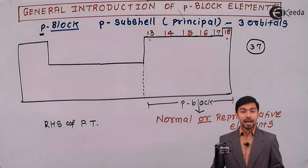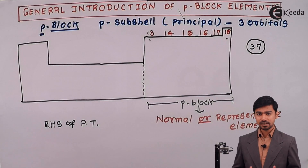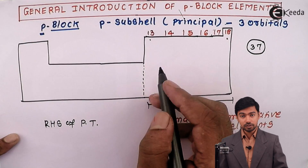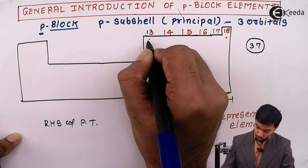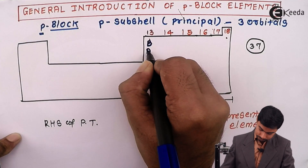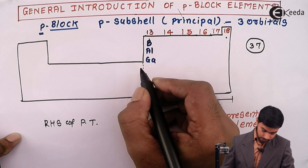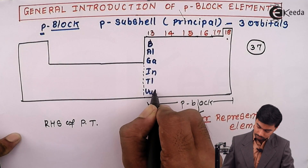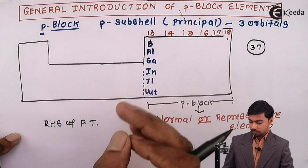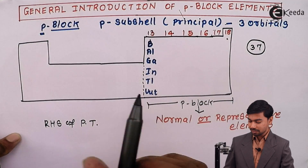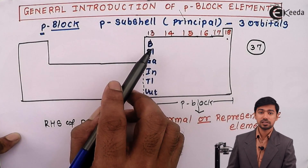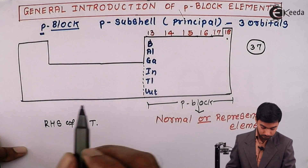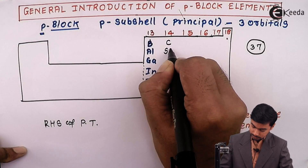Let us look at the segregation of these 37 p-block elements. The elements present in group 13 are Boron, Aluminium, Gallium, and Indium. Since group 13 starts with the element Boron, it is also called the Boron family.